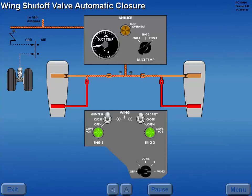On the ground, should an excessive temperature be sensed in the wing anti-ice supply duct, an additional sensor calibrated to a lower temperature illuminates the anti-ice duct overheat light and automatically closes the wing shutoff valves.